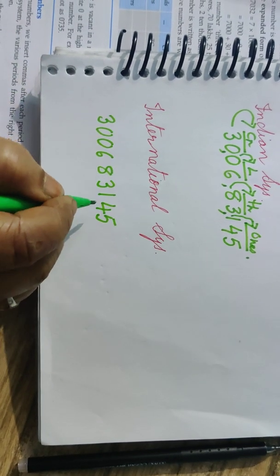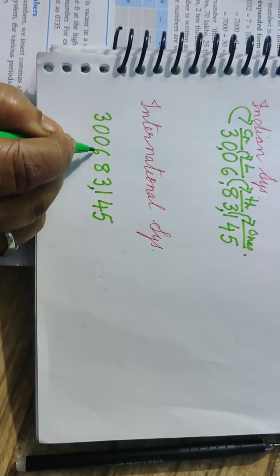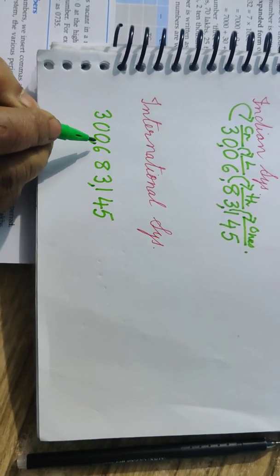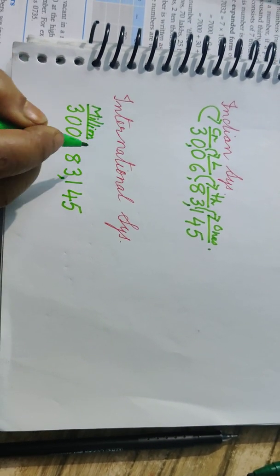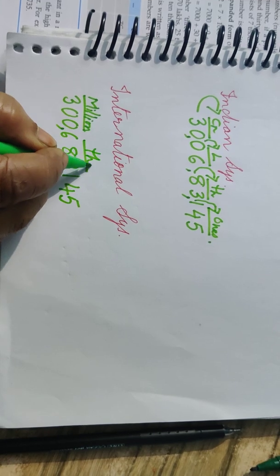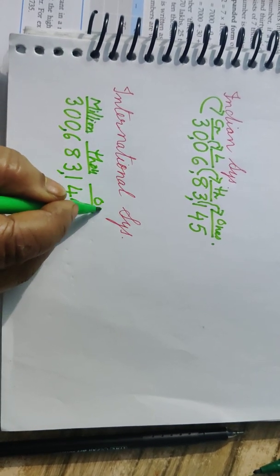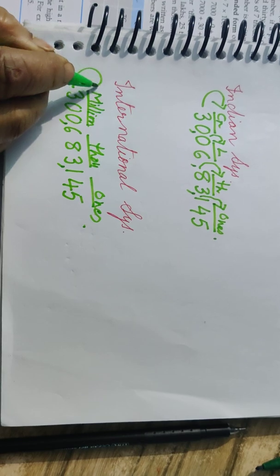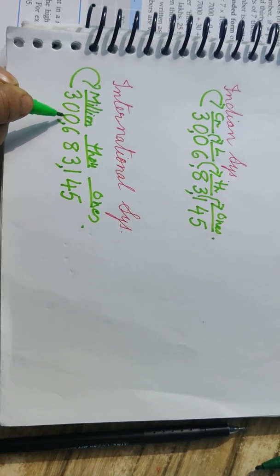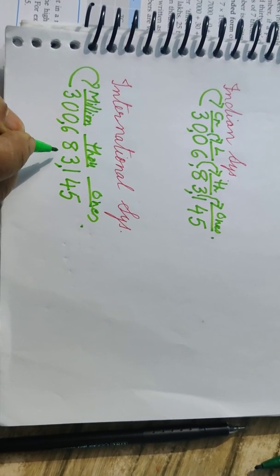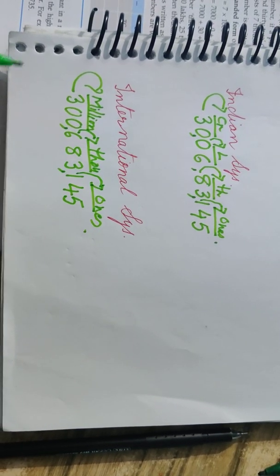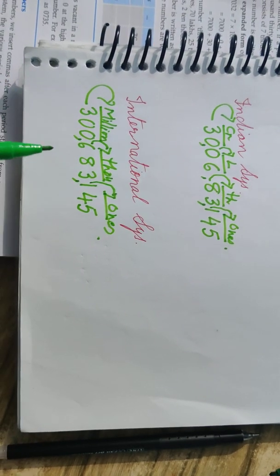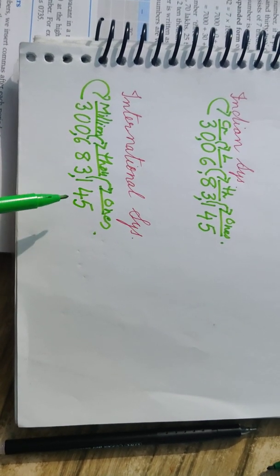In the International system, we again group in threes. Ones period gets three digits, thousands period gets three digits, and the remaining digits form the millions period. Reading number then period: three hundred million, six hundred eighty-three thousand, one hundred forty-five — so 300,683,145.